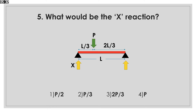What would be the X reaction? We have a beam with a point load as shown and the question is asking about the vertical reaction at the left support. Since the applied load is closer to the left support, we can guess that the vertical reaction will be more than half of P but less than P, and the only answer within this range is number three.